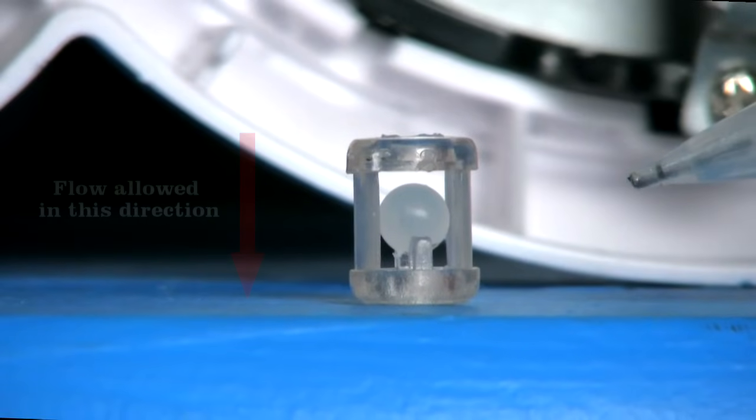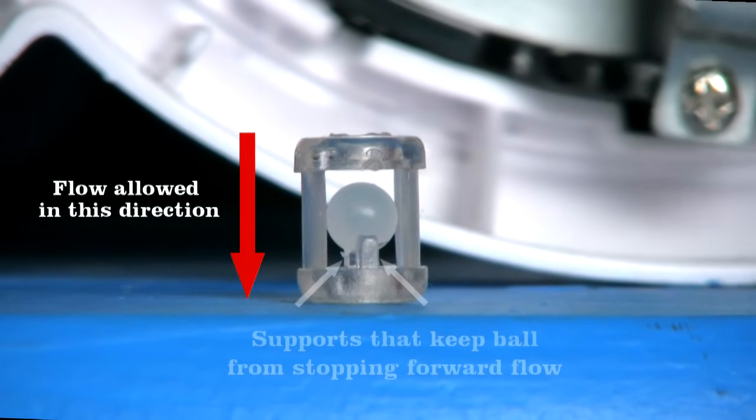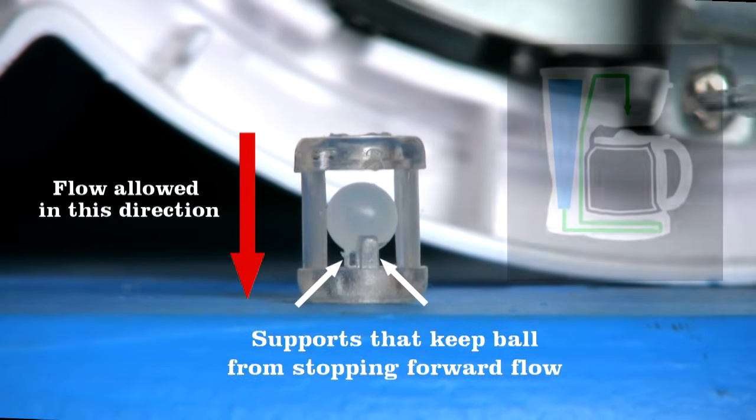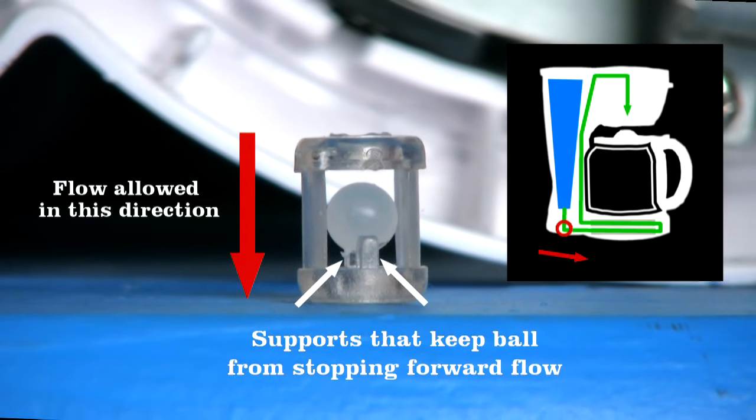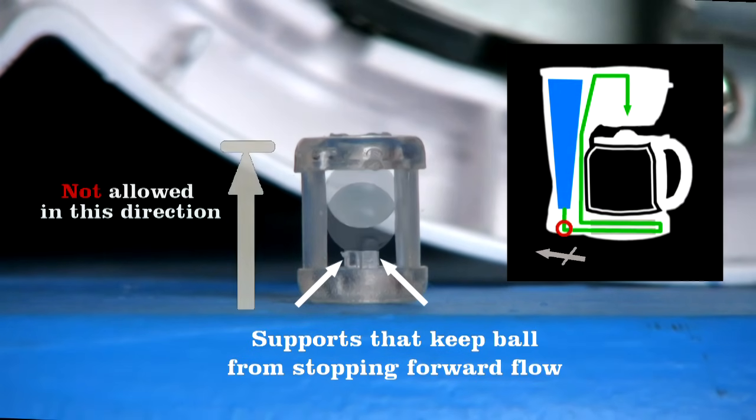Hidden in the tubing is a one-way valve. It's tiny. These two small pieces support the ball so water can flow through the reservoir into the heating element, but if water flows the other way, the ball rises, preventing it from returning to the reservoir.